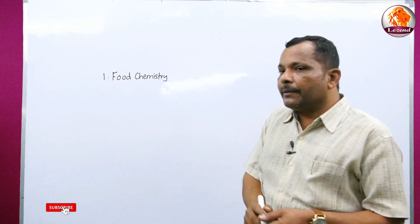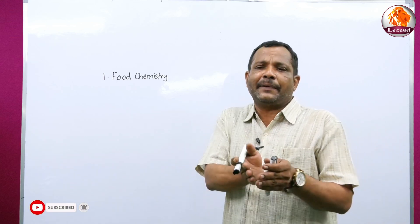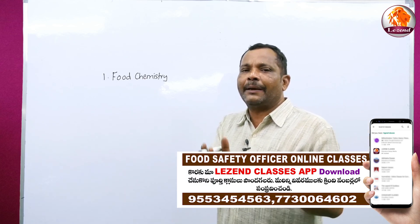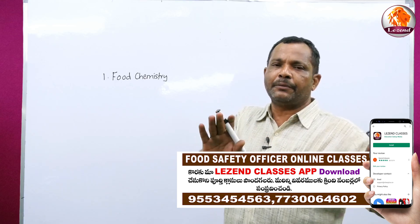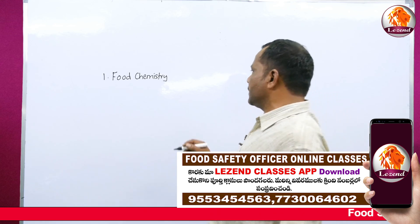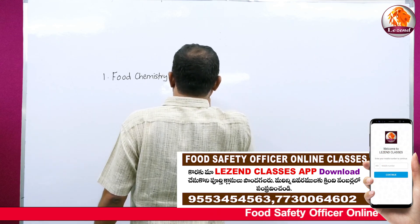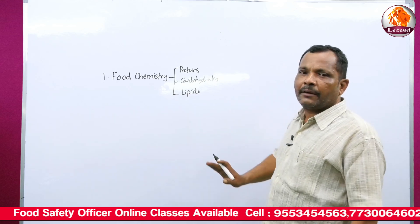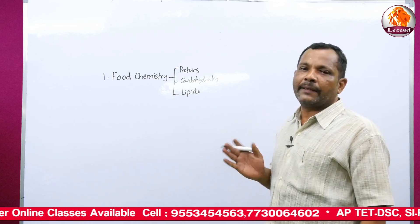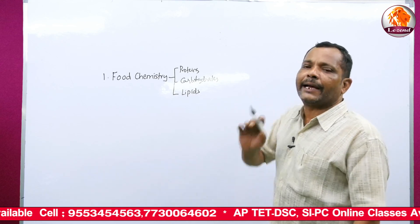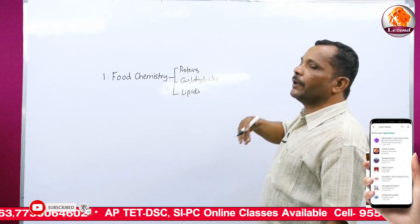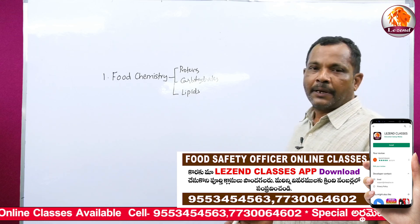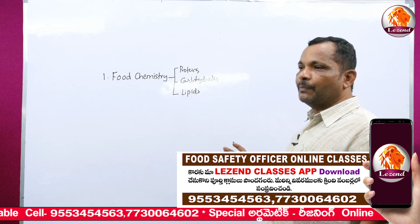Food chemistry deals with the chemical composition of food. Any type of food can be differentiated into three categories: proteins, carbohydrates, and lipids. This is the basic chemical composition of food — a food is either rich in protein, carbohydrate, or lipid. These three are the basic structures, and the same thing applies to carbohydrates and lipids as well.